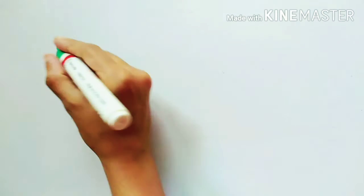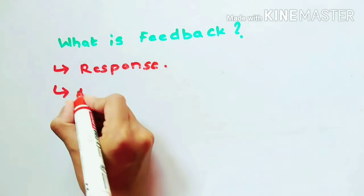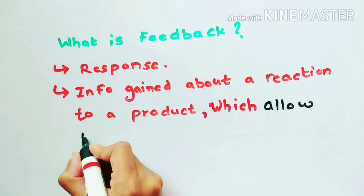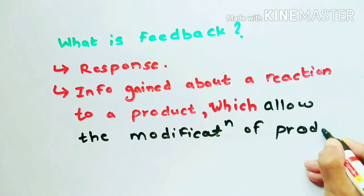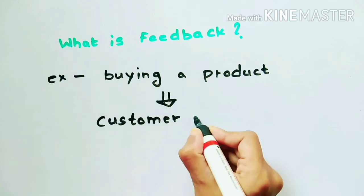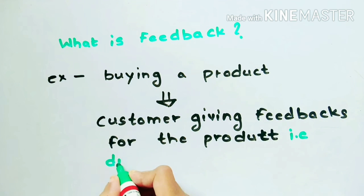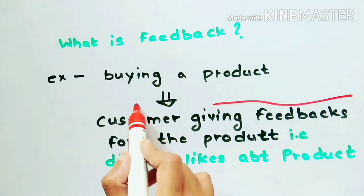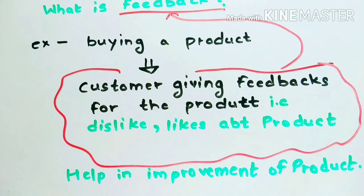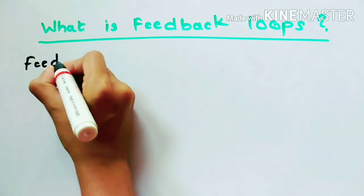So let's get started. What is feedback? Feedback basically is a response, meaning information again about a reaction to a product, which allows the modification of the product. Simply consider this example: you buy a product from a company, the company asks customers to give their dislike or like about the product — that is feedback. That helps the company to build a product that is more beneficial — that is modification of the product.